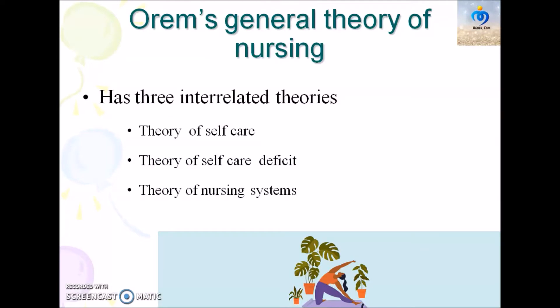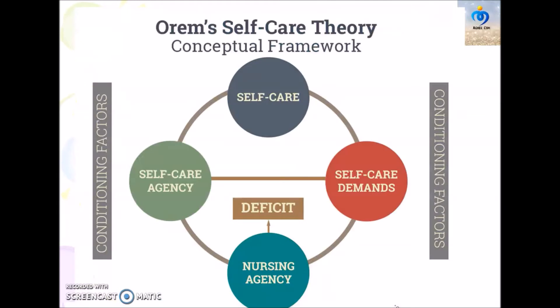Orem's General Theory of Nursing has three integrated theories: the first is the theory of self-care, the second is the theory of self-care deficit, and the third is the theory of nursing systems. This is the conceptual model of Orem's self-care theory, which will be discussed in later slides.